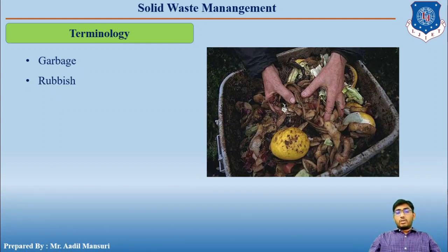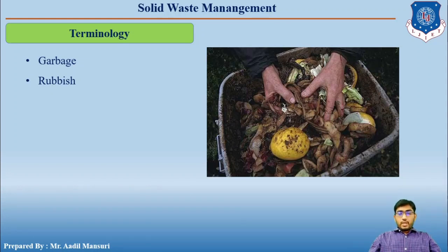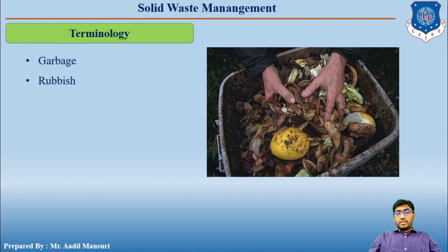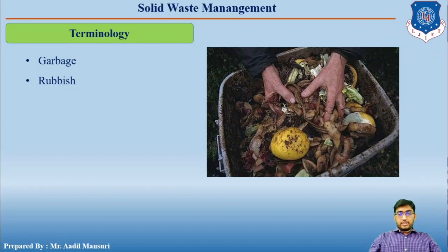Rubbish is the combustible or non-combustible solid waste which does not include food waste or any nutritious material. Combustible material includes paper, cardboard, plastics, textiles, rubber, leather, wood, furniture, and garden trimmings. Non-combustible material includes glass, crockery, tin cans such as Pepsi or Coca-Cola cans, aluminum cans, ferrous and non-ferrous metals, dirt, and construction waste. Its density is usually 50 to 400 kg per cubic meter.